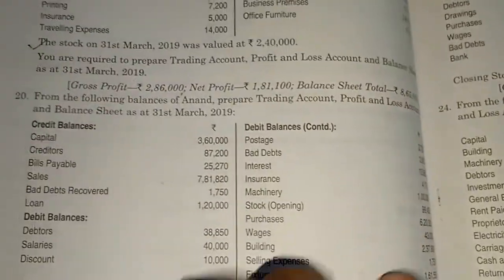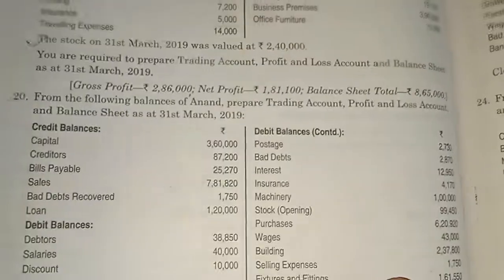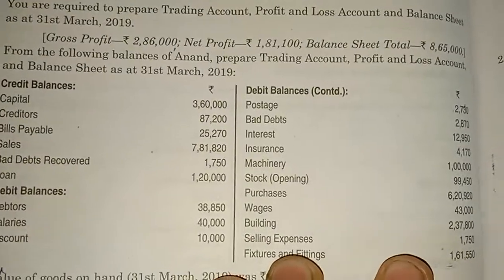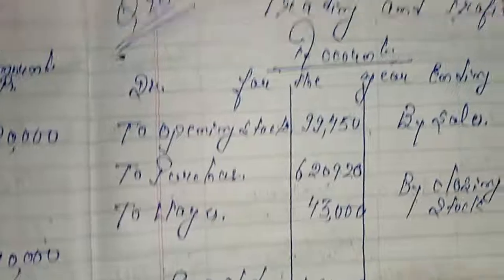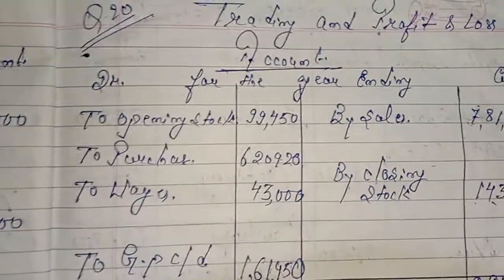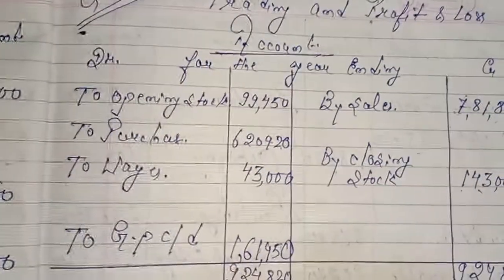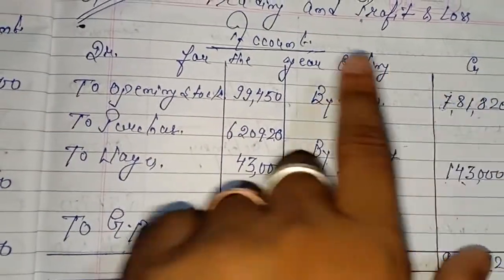यह question है और इससे हम लोगों को बनाना है Trading, P&L और Balance Sheet। Question number 20 के लिए सबसे पहले हम लोग Trading and Profit and Loss Account का format बनाएंगे — Debit और Credit — for the year ending।